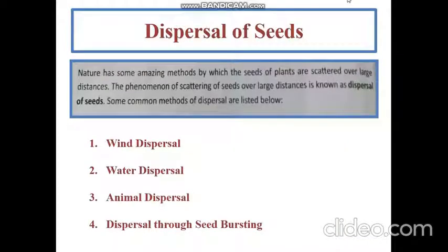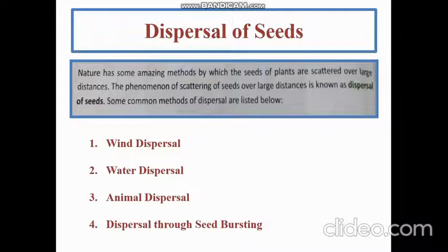Now continuing further, today we will discuss about dispersal. As you all know, forests are very essential for our society. They give us clean air, clean water, and provide us with unlimited products. So it is very important for plants to reproduce new plants. For that, seeds need adequate nutrients, warmth, and sunlight to grow, and each seed needs enough space.